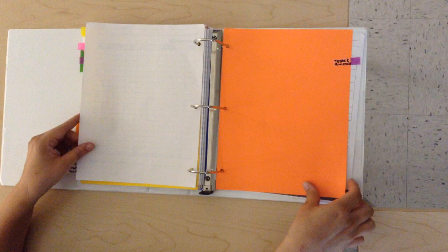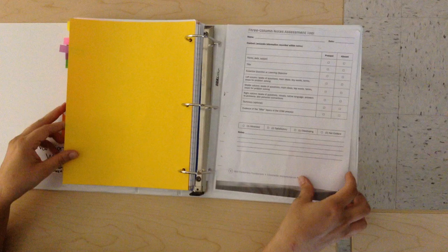In the back of your AVID binder, you will have a rubric for your Cornell notes assessments. These will be graded periodically throughout the marking period.